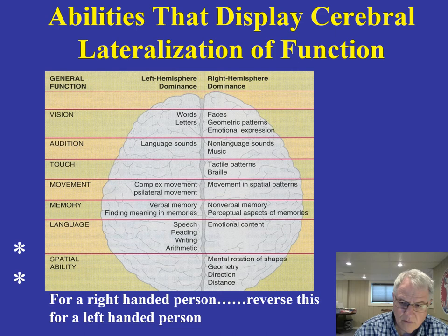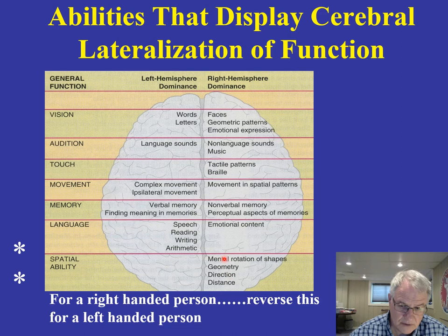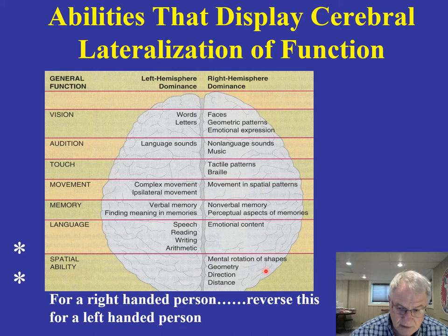The abilities that display cerebral lateralization are listed here. In particular, the primary language functions — speech, reading, writing, and mathematical abilities — are seen in the left hemisphere. On the other hand, spatial abilities — rotation of shapes, geometry, direction, distance — are typically seen in the right hemisphere. This is for a right-handed person; just reverse these things if you're looking at a left-handed person.